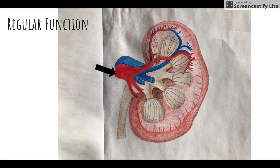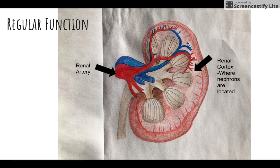Regular function of the kidneys: the blood leaves the heart through the aorta, traveling to the renal artery, which branches into afferent arterioles, going into the glomerular capillaries encased in the Bowman's capsule in the renal cortex. The waste material passes through the ureter and is stored in the bladder, while the newly cleaned blood returns to the bloodstream by the efferent arterioles to the renal vein and entering the heart through the inferior vena cava.